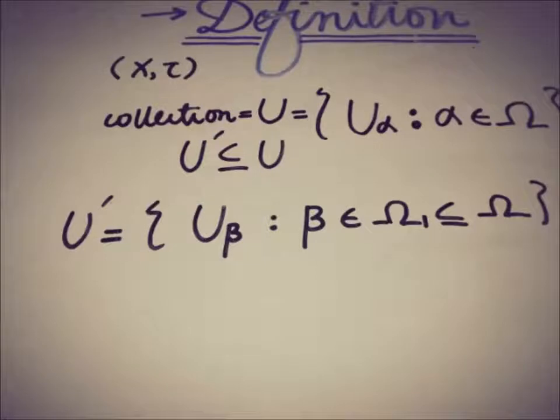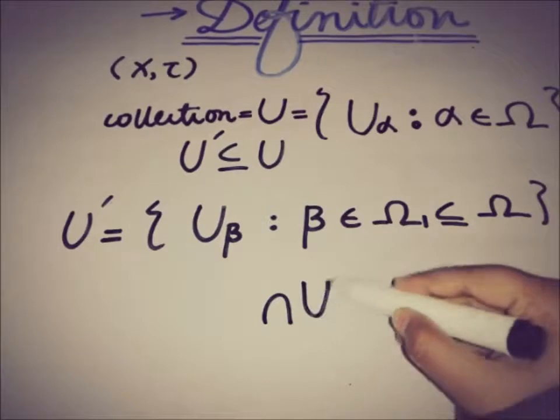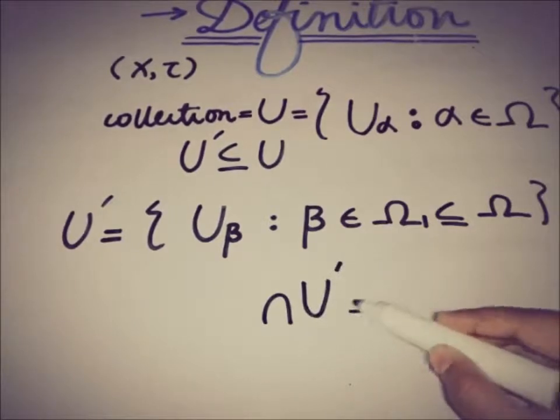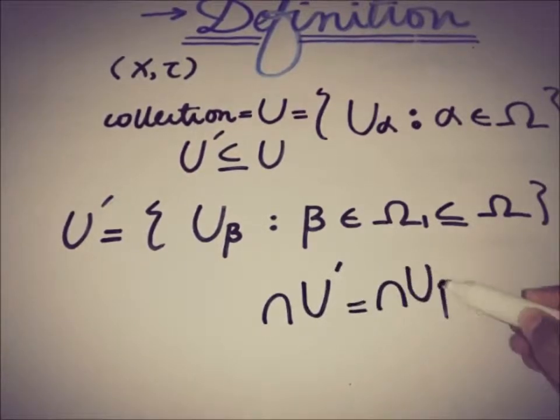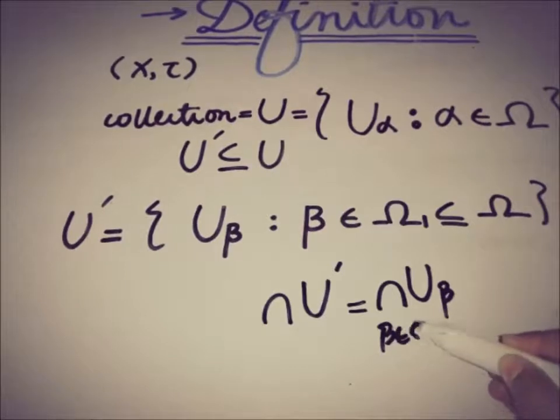So this collection u is said to satisfy finite intersection property if it has a finite subcollection u prime of this type where the intersection of this collection, which we can also write as this thing where beta belongs to, is not empty.